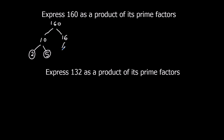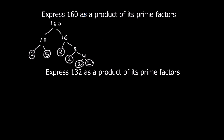16 is 2 times 8. 2 is prime. 8 is 2 times 4. Again, 2 is prime, and 4 is 2 times 2. So 160 as a product of its prime factors is 2 times 2 times 2 times 2 times 2 times 5 — that's five 2s multiplied together, and a 5.